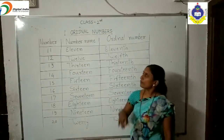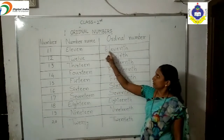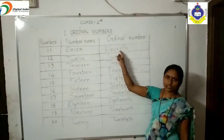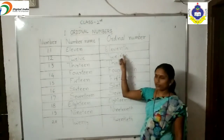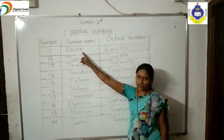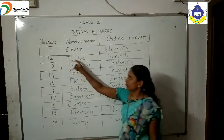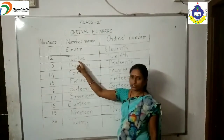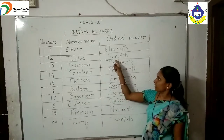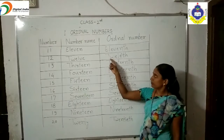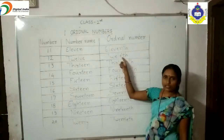Now, ordinal numbers. Eleven is spelled E-L-E-V-E-N, and you write T-H in front of eleven to make eleventh. And second, twelve: write down the spelling T-W-E-L-V-E, and its ordinal number is twelfth.